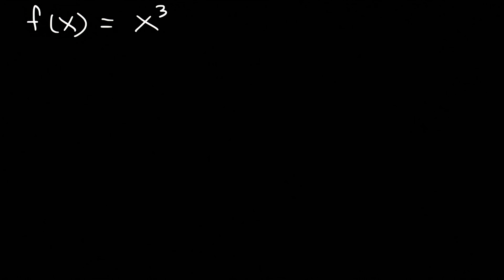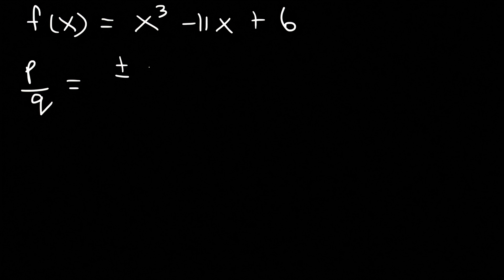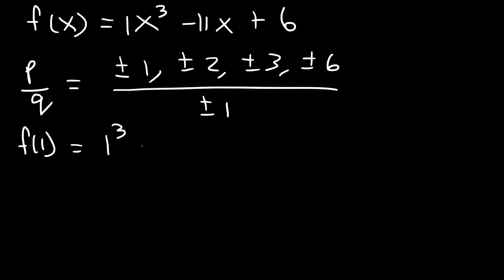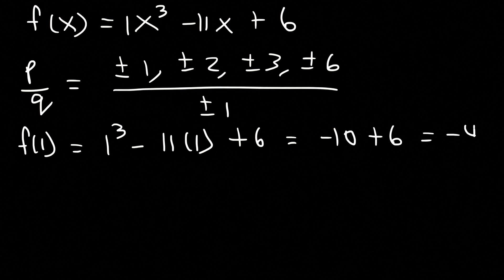Let's work on one more example. f(x) = x³ - 11x + 6. List the possible zeros and find all zeros. Factors of 6 are 1, 2, 3, and 6, and factors of the leading coefficient are just 1. Starting with f(1): 1³ - 11(1) + 6 = 1 - 11 + 6 = -4. So f(1) is not 0, and 1 is not a zero of the function.